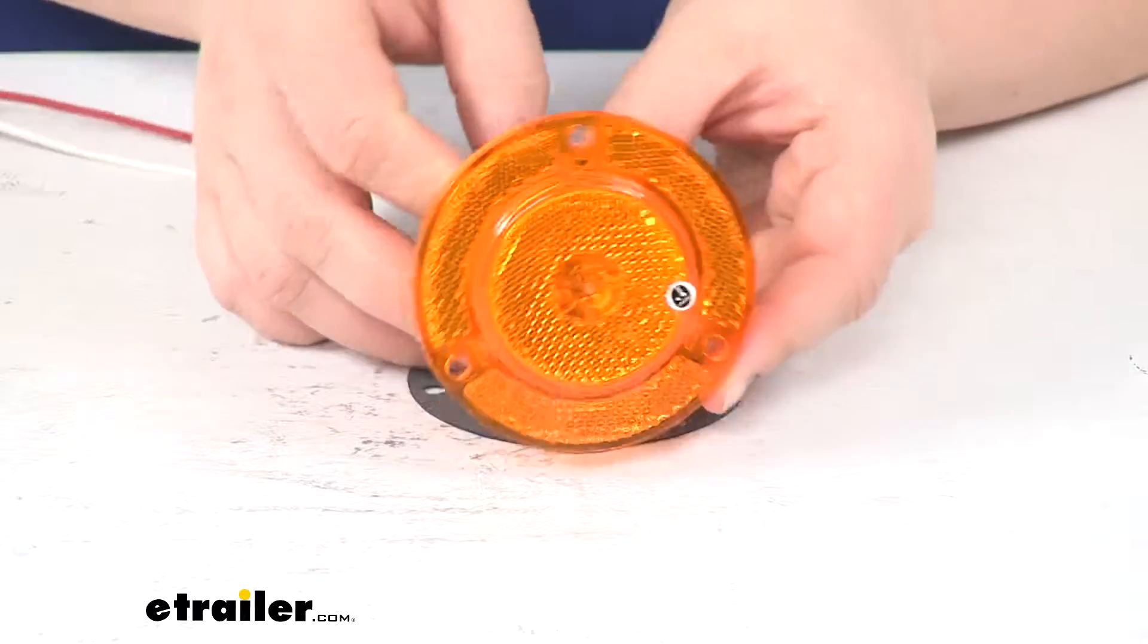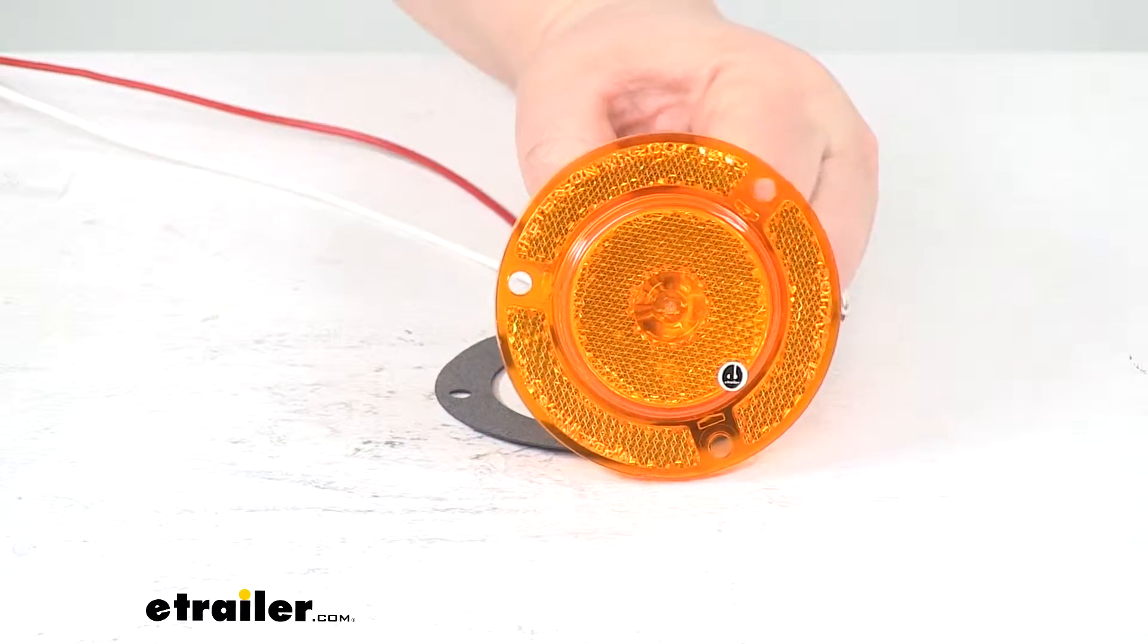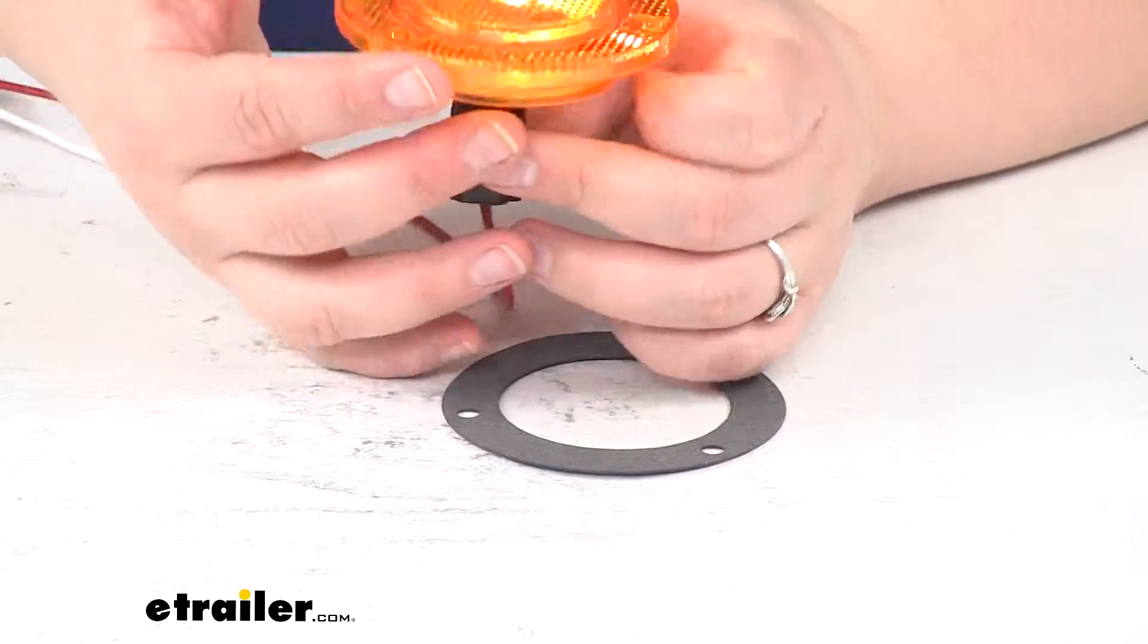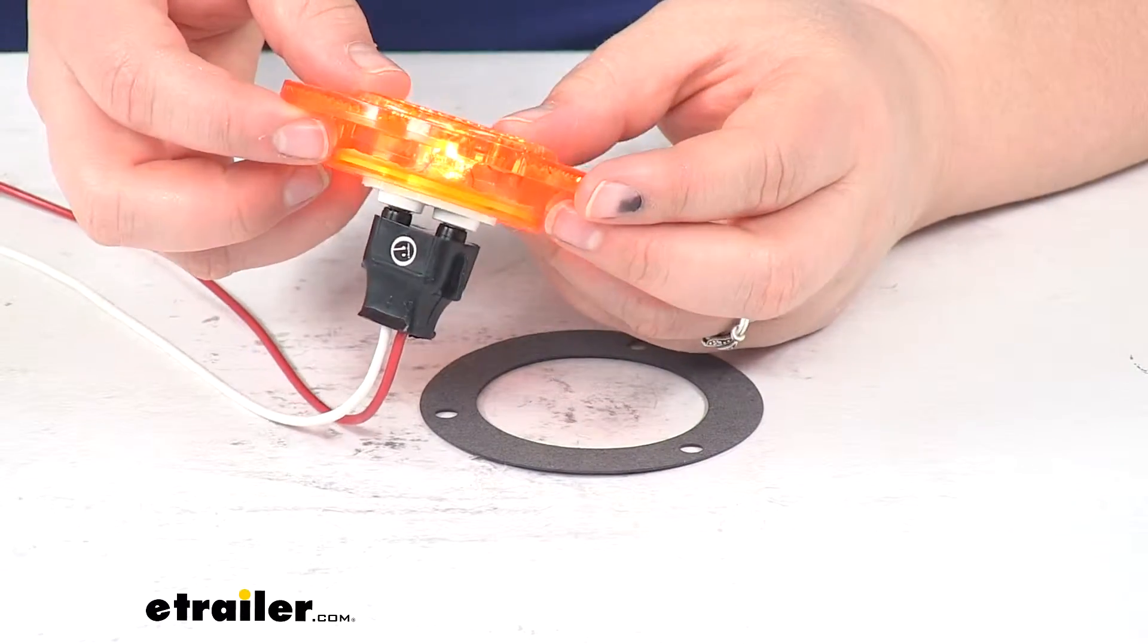So with that installed now, as you can see it just pops right into the back. I can turn on my power source and that will turn on my light. This is going to have an incandescent bulb, which you can kind of see from the side there.